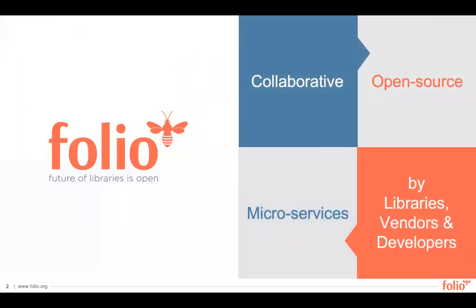FOLIO is a library service platform based on microservices so that implementing institutions can determine the components of FOLIO that meet their needs. The tooling is developed by library staff, vendors, and developers, employing an approach that leverages subject matter experts who are organized into special interest groups, or SIGs — the Metadata Management SIG, Resource Management SIG, Reporting SIG, and more. The SIGs define priorities and development requirements and then work with UX designers and backend developers to collaboratively build the applications that comprise FOLIO.